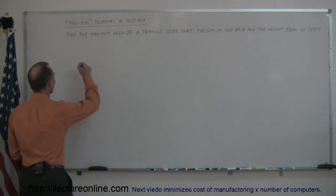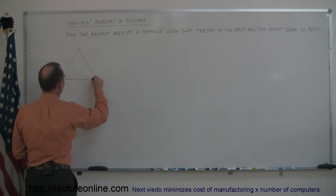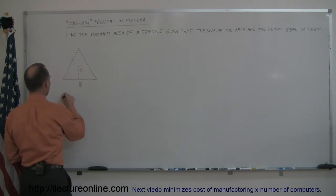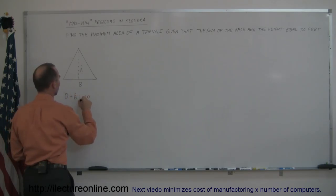So let's make a drawing of that. Here's a triangle. The base B at the bottom and the height H right there. And so here we're given that B plus H equals 30 feet.